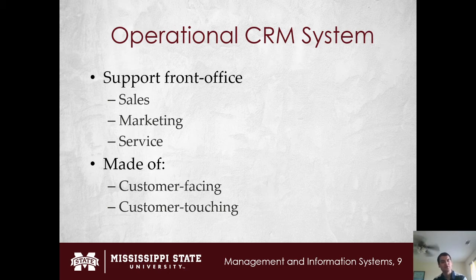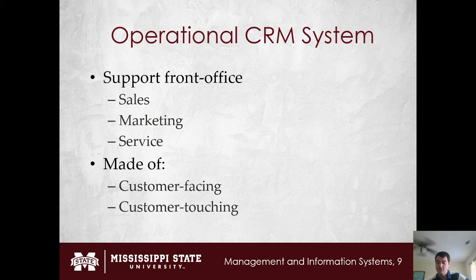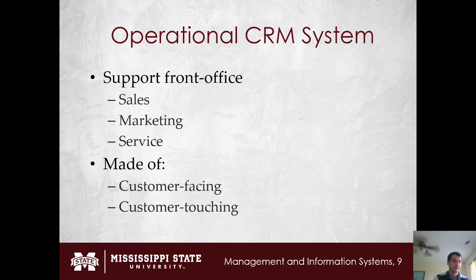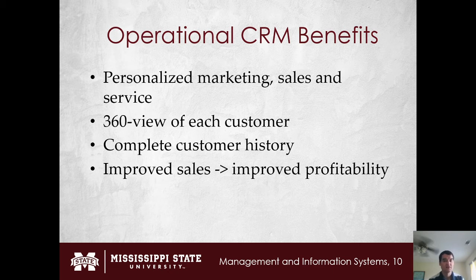There are two major components to any operational CRM: customer-facing and customer-touching. The distinction is whether the customer directly interacts with the system or goes through an intermediary. Customer-facing means the customer interacts with an intermediary, such as an employee. Customer-touching is where the customer directly interacts with the system itself. With an operational CRM, we're able to have marketing that more readily and easily relates to each customer, enabling personalized strategies.